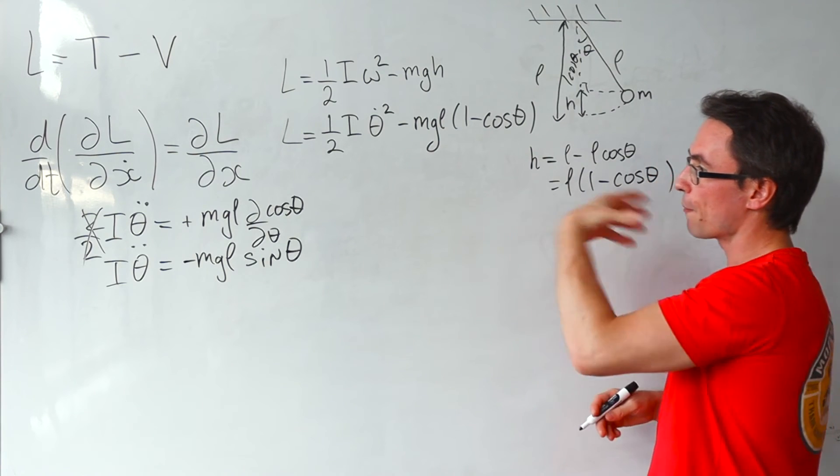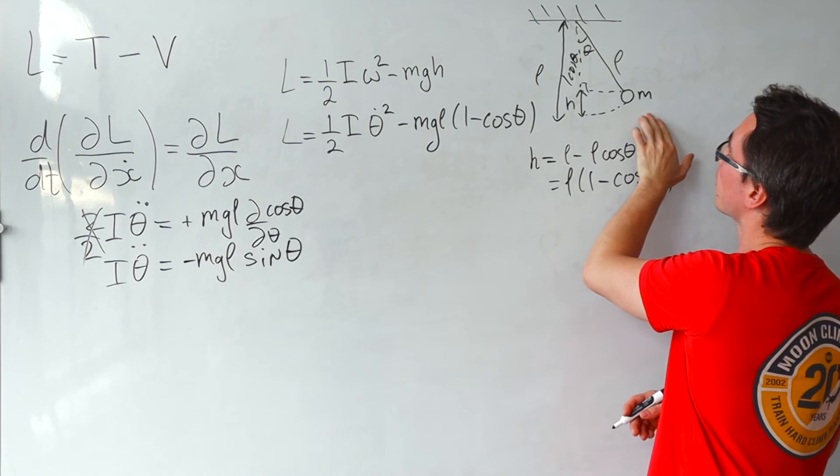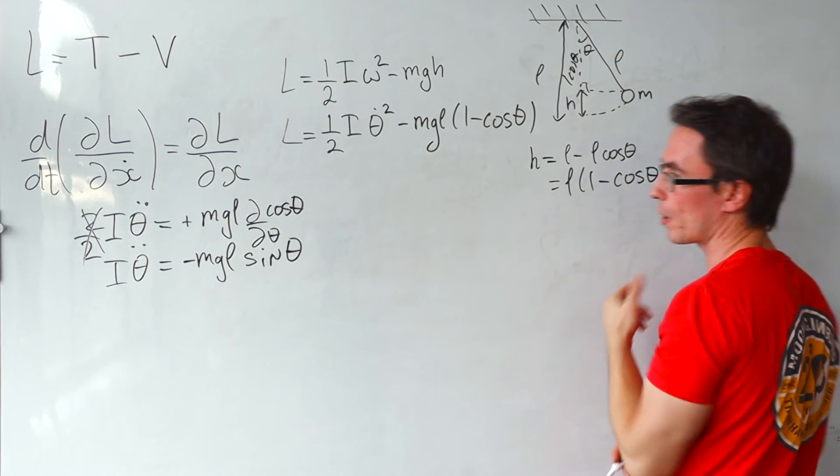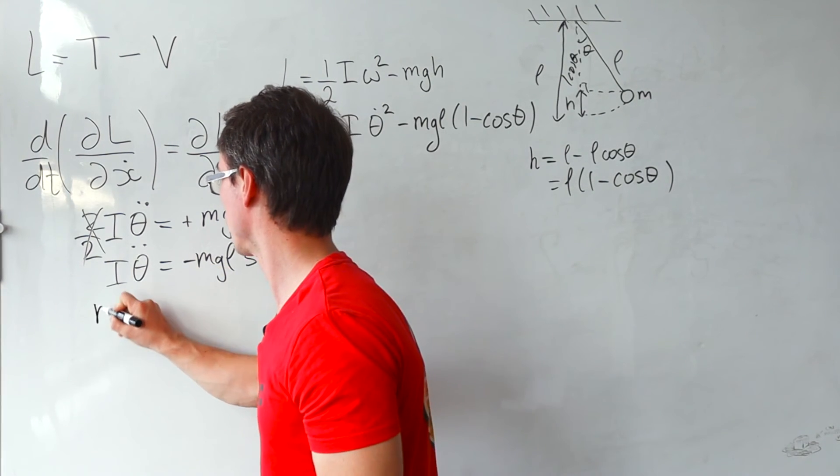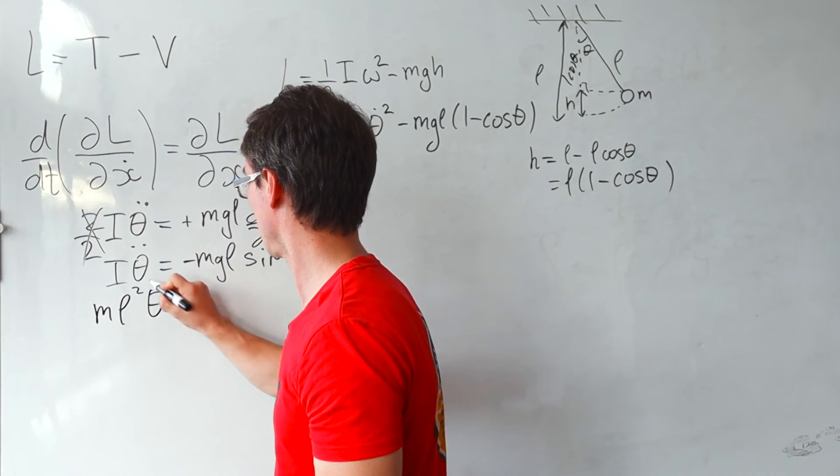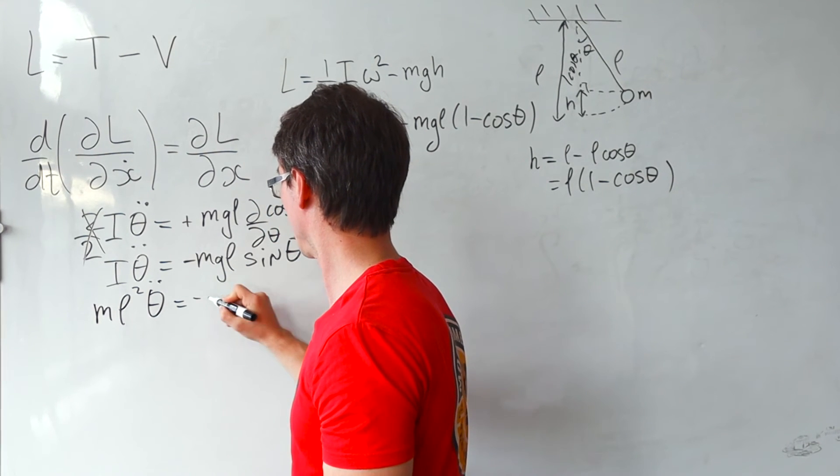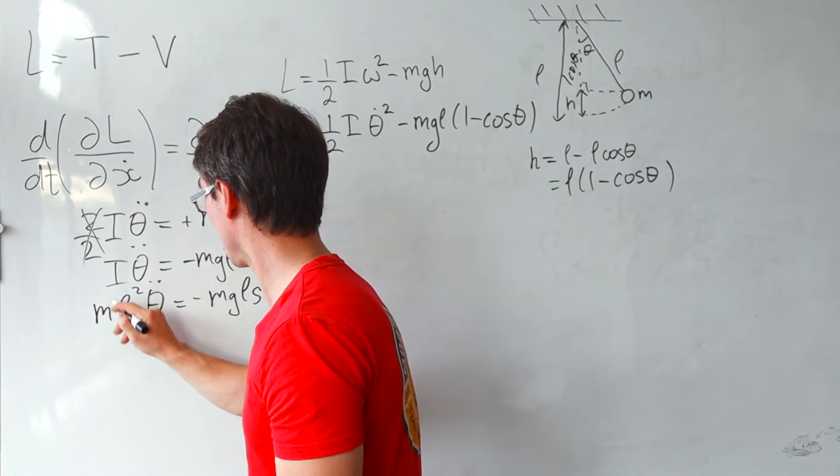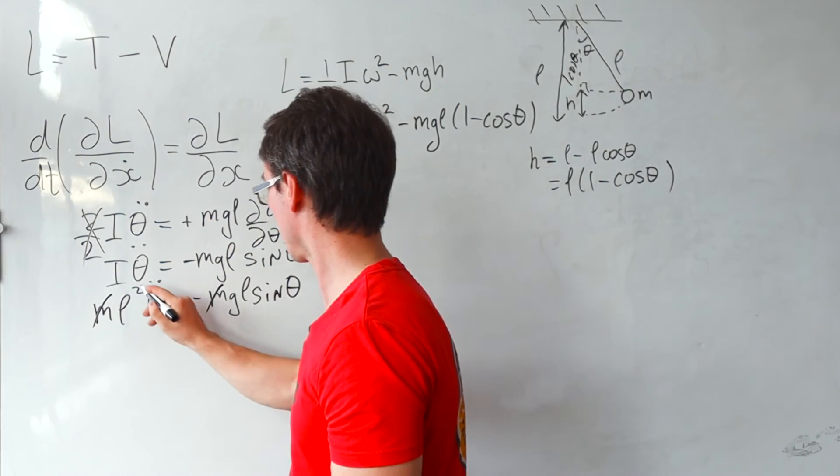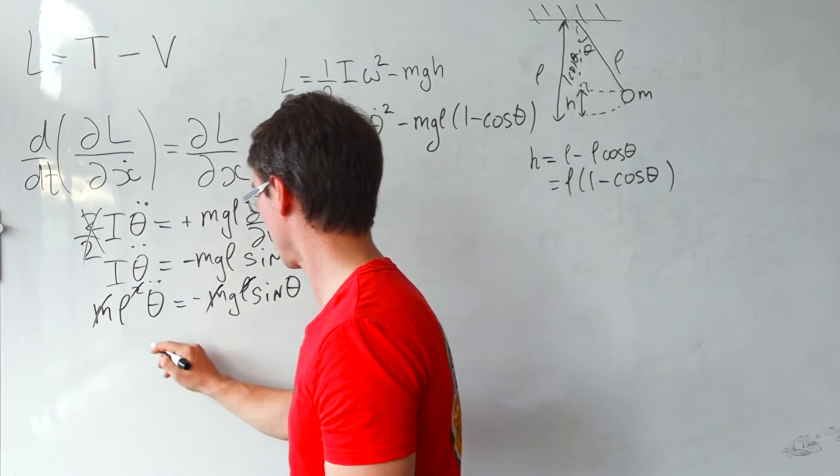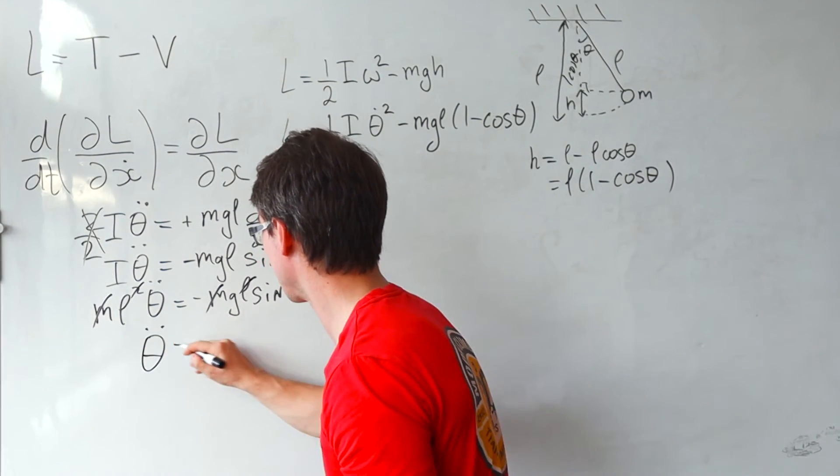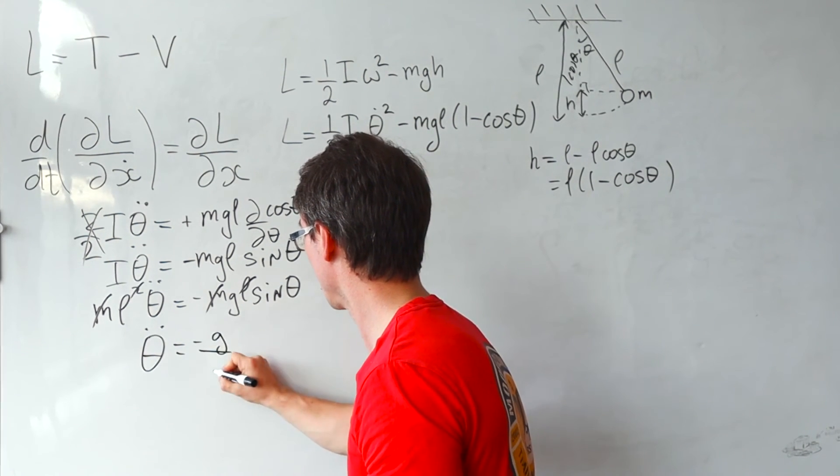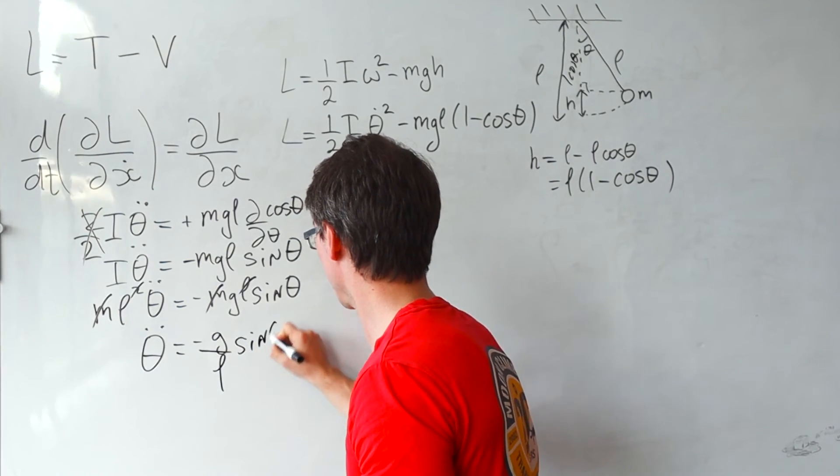The moment of inertia in this case will just be given by the value of the mass multiplied by the distance to the pivot point squared. So in this case, this is just L, so I will just be given by M L squared. Theta double dot is given by minus MGL sine theta. So the M's are going to cancel, this here is going to be canceling. So what we get is that theta double dot is going to be minus G over L sine of theta.